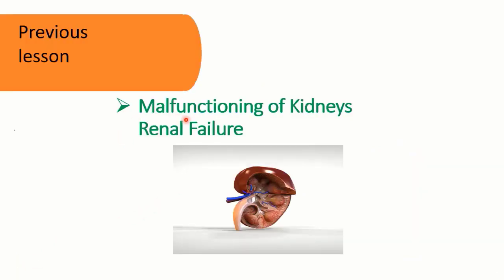In the previous lesson, we studied about the causes of malfunctioning of kidneys. We discussed how stones are formed in kidneys and the method of removal of these stones. The method was lithotripsy, where shockwaves are bombarded outside the body, the stones are crushed and they finally exit through urination. We also discussed renal failure, which refers to the complete or partial failure of kidneys.